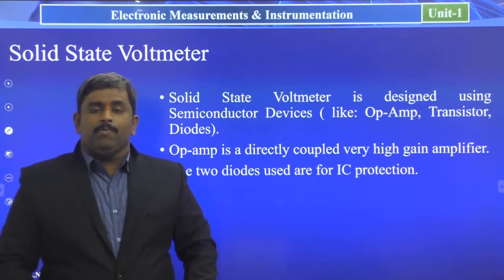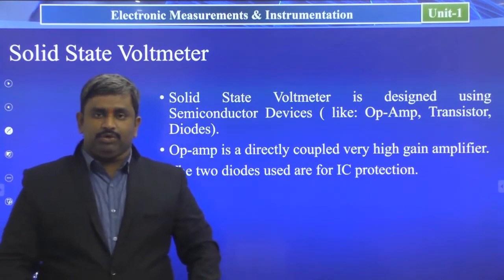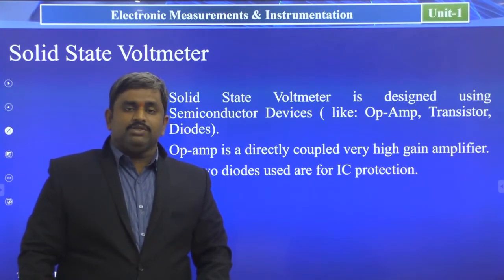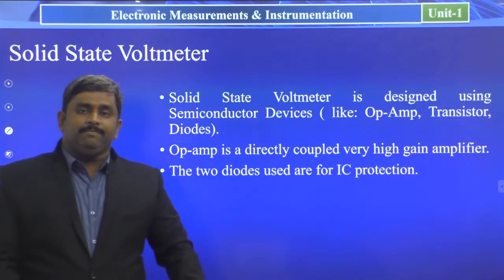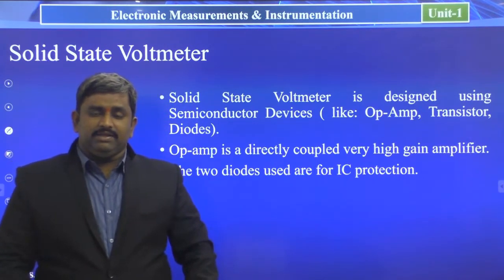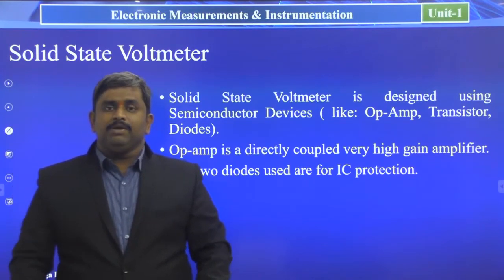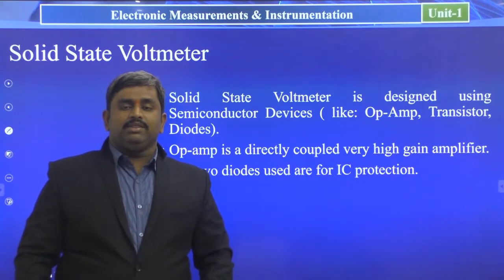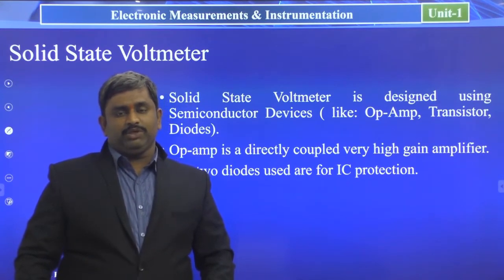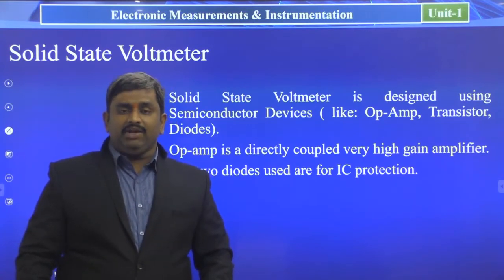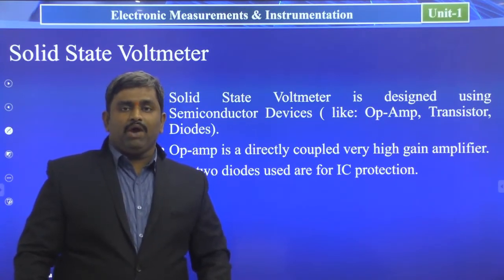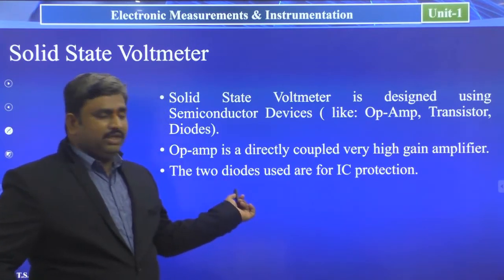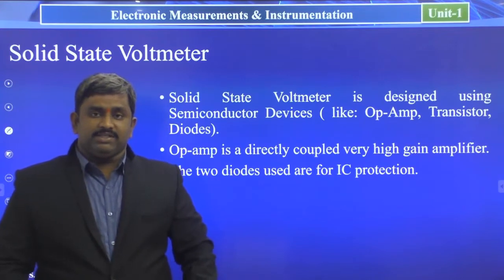The two diodes are used for protecting the complete circuit. Today all voltmeter circuits come in the form of an IC, and we need to protect that IC from fluctuations in the measuring variables. To reduce unwanted current or voltage flow, we use a protection network with two diodes in forward and reverse bias.